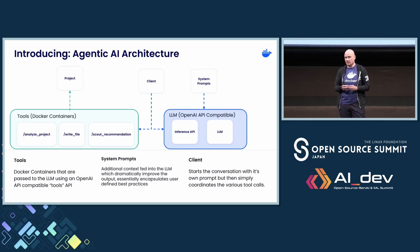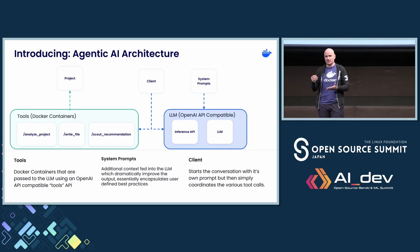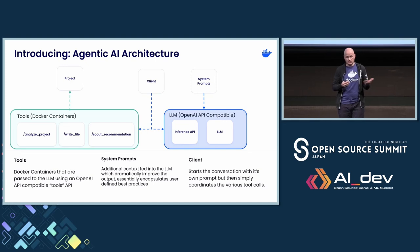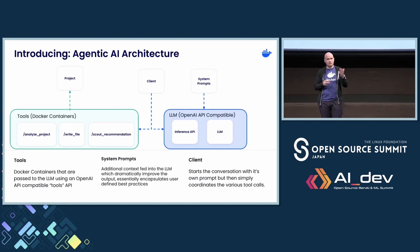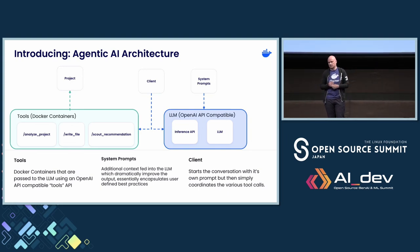I want to show you how this works in real life. This is one example of the architecture of our prototype application — a Visual Studio Code extension that will help you write Docker files for your projects. You don't need to know anything about Docker. By using this AI-powered application, you can generate your Docker files. The LLM supports calling functions that provide extra information about your projects. We wrapped all of these functionalities inside Docker containers — for example, analyzing the project, writing a Docker file, or getting a Docker Scout recommendation, which suggests a perfect base image with fewer vulnerabilities that is up-to-date.